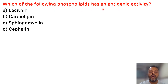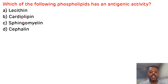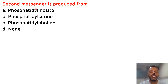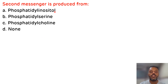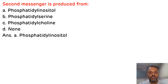Third question: which of the following phospholipids has antigenic activity? The options are lecithin, cardiolipin, sphingomyelin, and cephalin. The phospholipid with antigenic activity is cardiolipin, so the correct answer is B. Fourth question: second messengers are produced from which of the following? The options are phosphatidylinositol, phosphatidylserine, phosphatidylcholine, and none. Second messengers, namely inositol triphosphate and diacylglycerol, are produced from phosphatidylinositol by the action of phospholipase C. The correct answer is A.